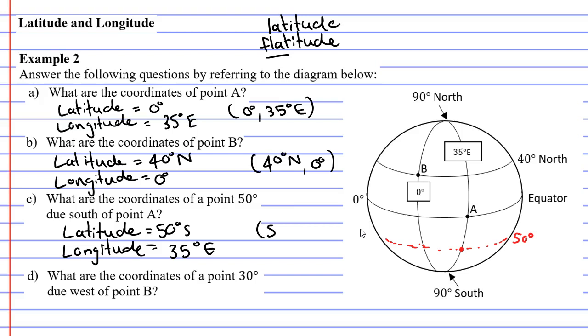It's still remained on this 35 degrees east longitude. So for our coordinate, we're going to write 50 degrees south first, latitude first, longitude last, 35 degrees east.